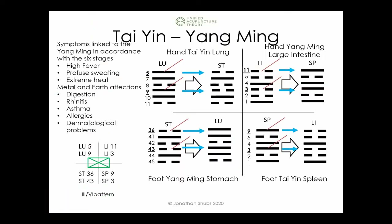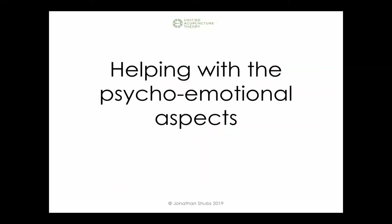The next aspect we're going to look at is the psycho-emotional aspects. My psycho-emotional approach mainly comes from the four-needle five elements. There's a couple of things to explain about how the four-needle five elements are used within the UAT system. The first idea we need to understand is that there is no such thing as a negative emotion — all emotions are responses of the body to either an external or internal event, helping us understand how to respond better. Every emotion has a function behind it.